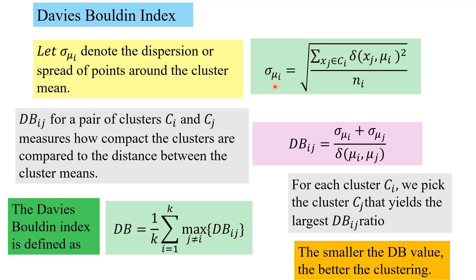Having computed sigma_mu_i and sigma_mu_j, the db_ij for a pair of clusters C_i and C_j measures how compact the clusters are compared to the distance between the cluster means. It is the sum of the dispersions for cluster i and cluster j as a ratio of the distance between means.